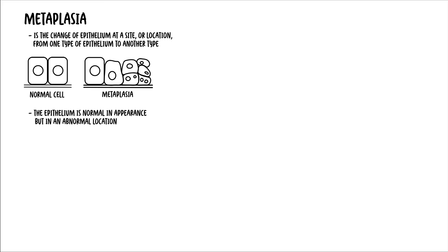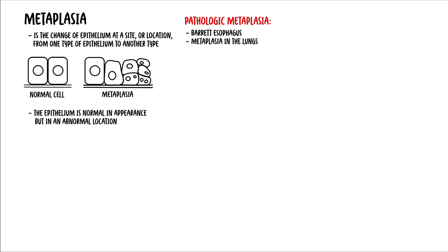How metaplasia occurs is that the epithelium — the cell that is normally present at the site — cannot handle the new environment or stimulus, and so it converts to a type of epithelium that can adapt to these changes. Metaplasia is more often than not pathologic. A good example is seen in Barrett's esophagus and metaplasia in the lungs.